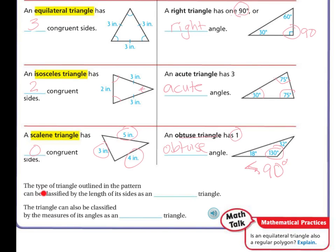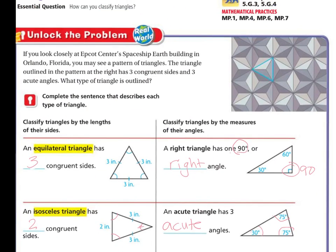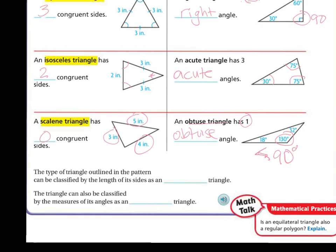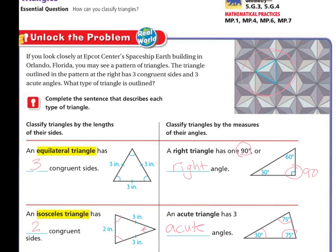The type of triangle outlined in this pattern can be classified by the length of its sides. Remember, the triangle we're talking about is this one right here. It can be classified as an equilateral triangle. So, remember, everything is equal. And the triangle can also be classified as an acute triangle because all of the angles here are smaller than 90 degrees. So, it has two classifications.